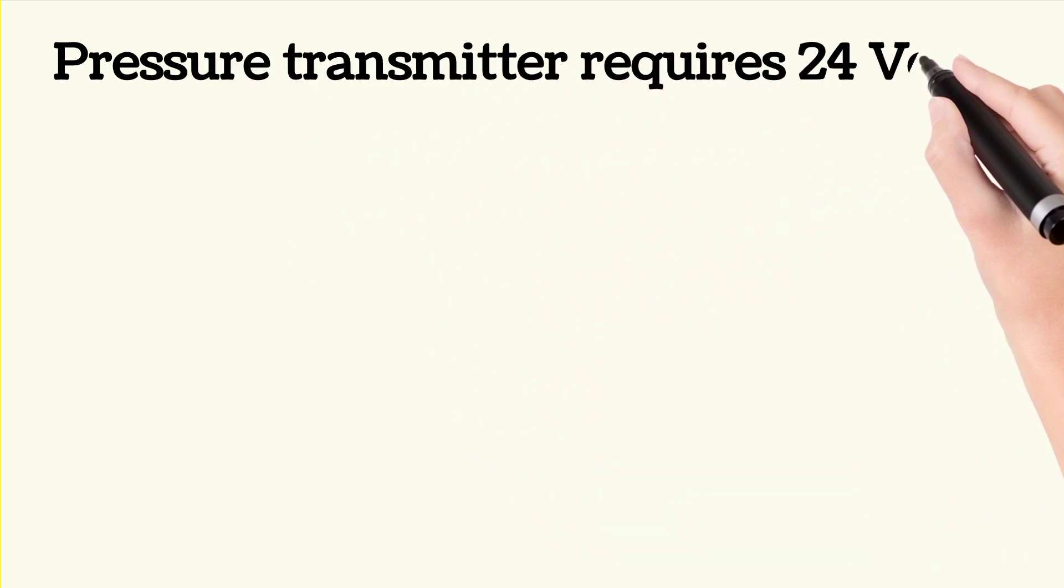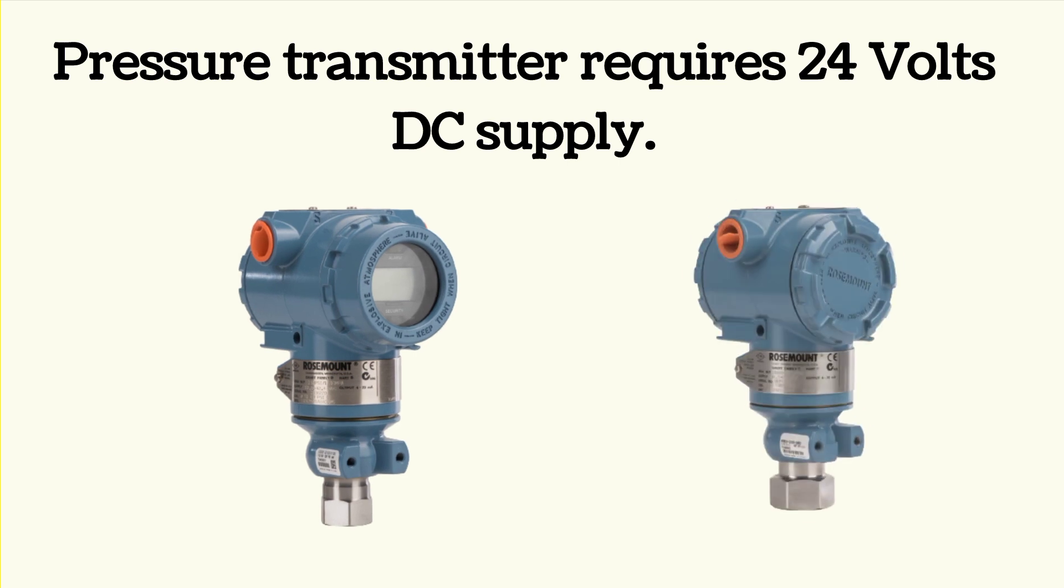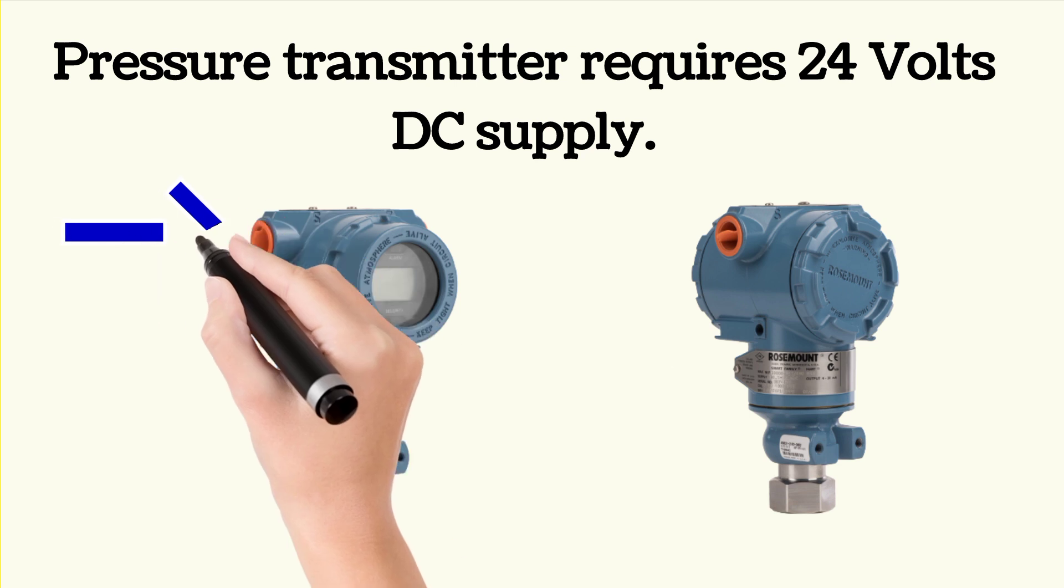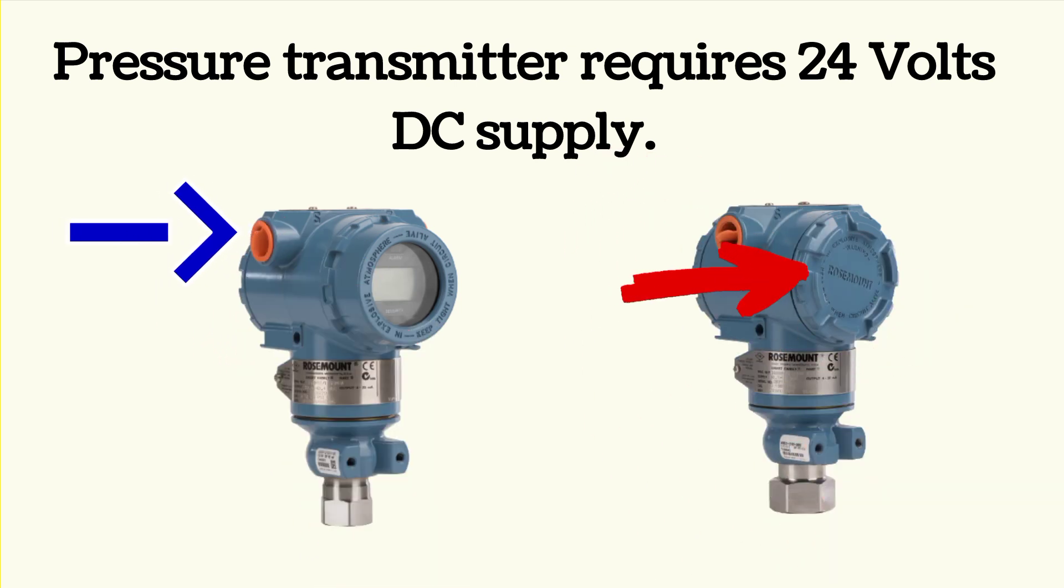To switch on the pressure transmitter, 24V DC supply is required. 24V DC supply is given at the port shown by the arrow. In the right picture, the back view of transmitter is shown. We can make the connection by opening back cover shown by the arrow.